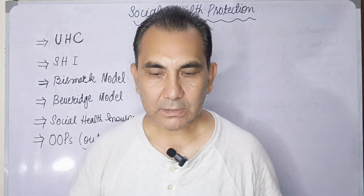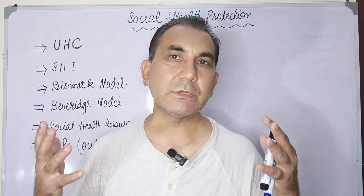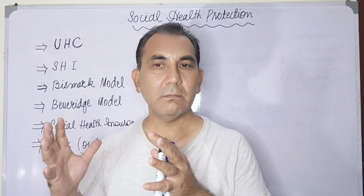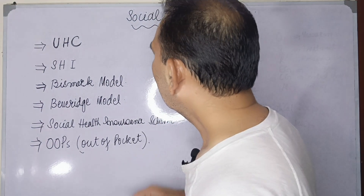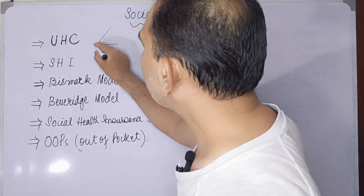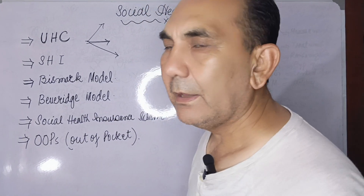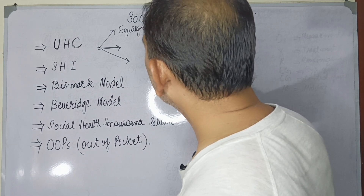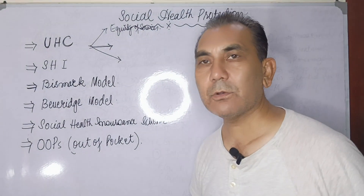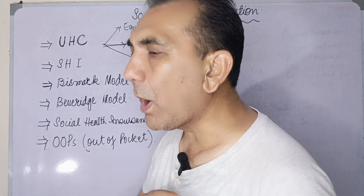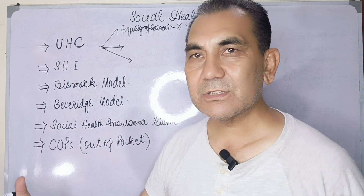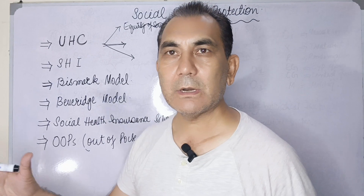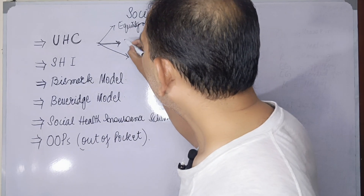I hope today's lecture has clarified your concept of social health protection and universal health coverage. The main aims of Universal Health Coverage are, first, equity of services — meaning providing healthcare services to everyone when they are needed, whether at the primary, secondary, or tertiary level.